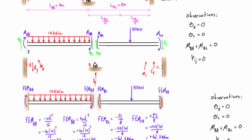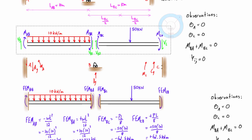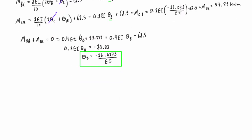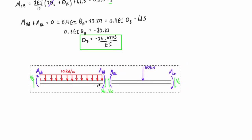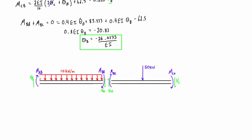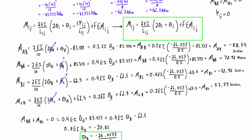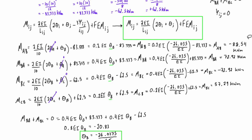Now that we have all the moments, we return to the free body diagrams we've been drawing. We paste them into our working space and fill in the computed values for M-AB, M-BA, M-BC, and M-CB.